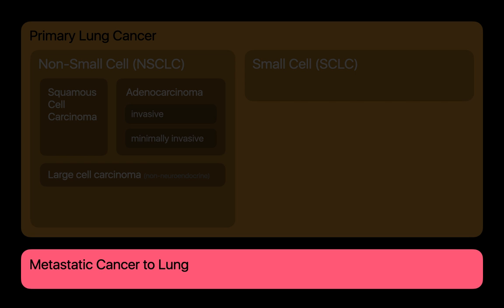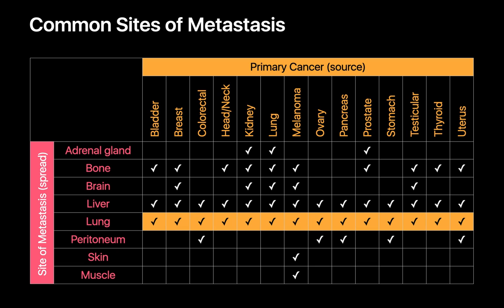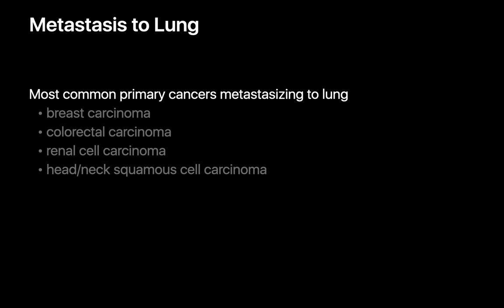In the last few minutes, let's talk about metastatic cancer in the lung. The common sites for primary lung cancers to metastasize to are usually adrenal glands, bone, brain, liver, and lung itself. Pretty much every primary malignancy in the body can metastasize to the lung, which is why chest CTs are such a common study in oncology. Of all the primaries, the top non-lung cancers that metastasize to the lung are usually breast cancer, colorectal cancer, renal cell carcinoma, and head and neck cancers.